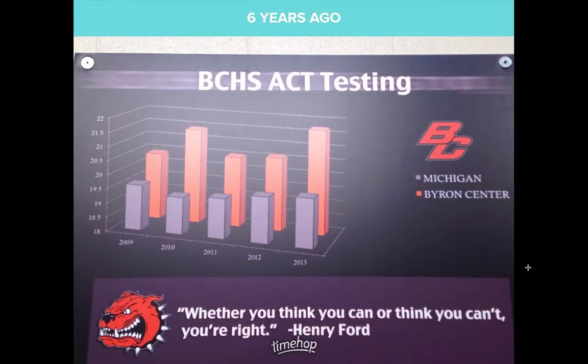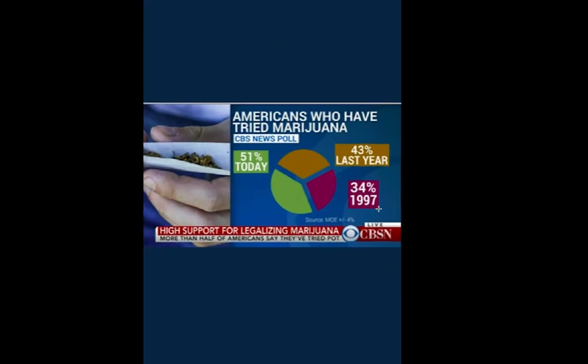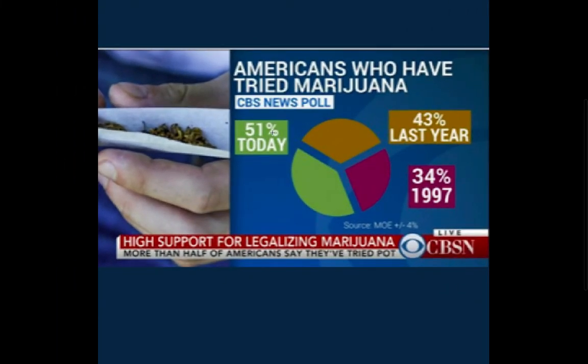You got to be aware of these things when you're seeing them. This next one just was one in the news that I came across. And just ignoring what it's talking about, just look at the graph itself. That graph itself is just not good. How can you have a circle graph with 51, 43, and 34? That doesn't make sense. And you're not talking about parts of a whole. You're talking about three different poles today, last year in 1997. You can't combine those into one circle graph. That doesn't make any sense.